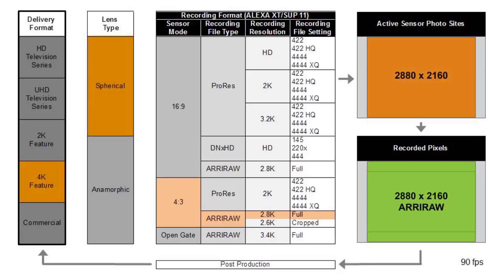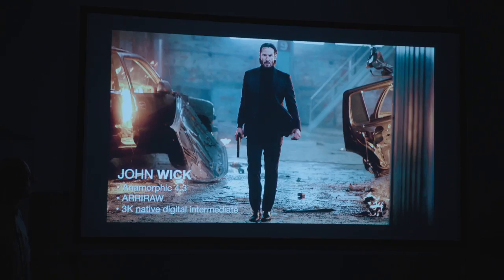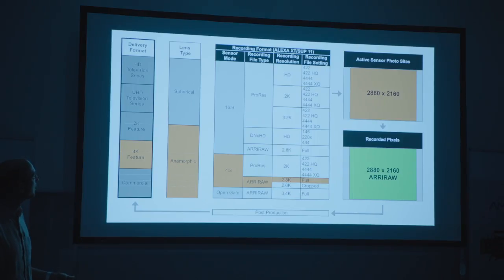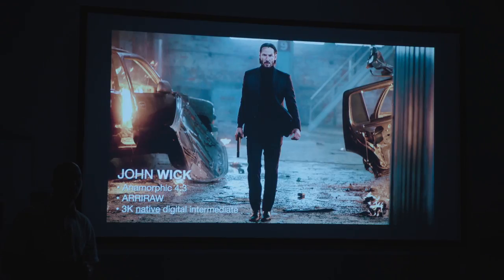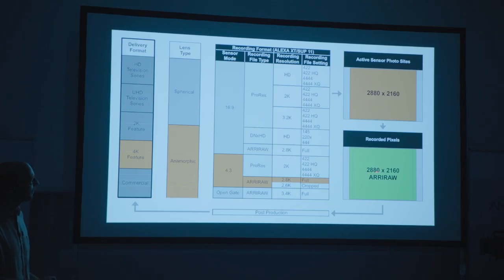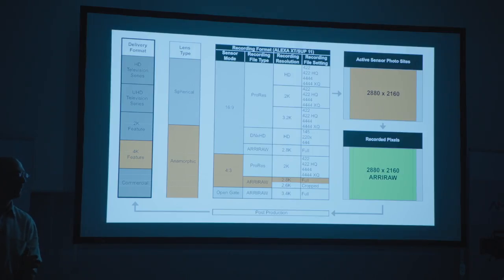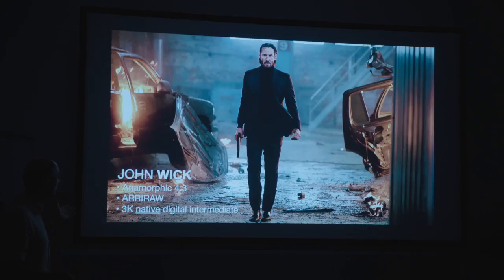Less frequently, people shoot 4x3 ARRI RAW and use the top and bottom portions for VFX markers. For anamorphic 4K features, it's the same: 4x3 ARRI RAW 2.8K. John Wick, with post-production by Light Iron in Los Angeles and Michael Cioni, was shot this way — they did the whole post in 3K, taking the 2880x2160 and working in 3K, then bumping to 4K at the very end. The advantage is avoiding the very high cost of full 4K post-production.